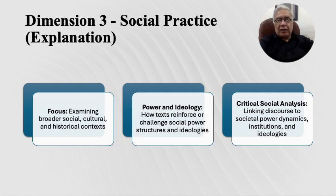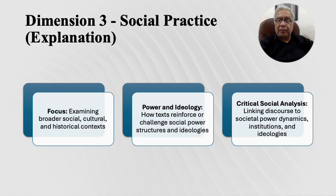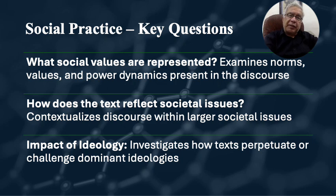In dimension three, we examine what social practices underlie the creation of the text. We look at the social, cultural, and historical context in which the text was created. We also examine what power existed at the time of the text's creation — what kind of social power guided and shaped the structures and ideologies used to produce the text. We also link discourses to societal power dynamics and institutions, seeing how the text relates to social institutions and ideologies.